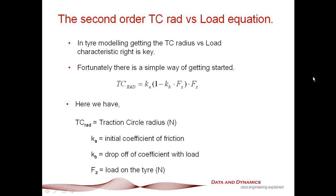Okay, the second order traction circle radius versus load equation. Now, if you have been watching the Dan's Vehicle Dynamics Corner episodes or indeed any ChassisSim tutorials or read any of my Race Car Engineering articles, one of the things I will always stress is that if you can get the traction circle radius versus load characteristic of your tire right, it will forgive a multitude of sins. Now, the building block of this is the second order traction circle radius versus load equation. That is, traction circle radius equals Ka, the initial coefficient of friction, times one minus Kb times Fz, all multiplied by Fz.